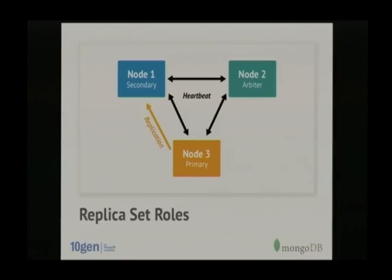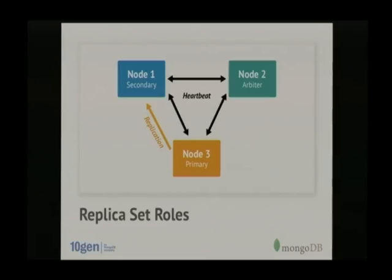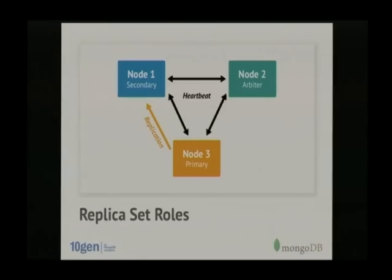The third type of node is an arbiter — a non-data-bearing node that exists to vote in elections. In a replica set you generally need an odd number of nodes to avoid split-brain situations when maintaining a quorum. With three nodes, if any one goes down the other two can still vote and say they have a majority and elect a new primary. The arbiter acts as a tiebreaker so you don't need to provision a full data-bearing server.